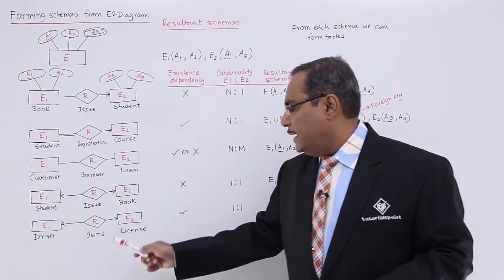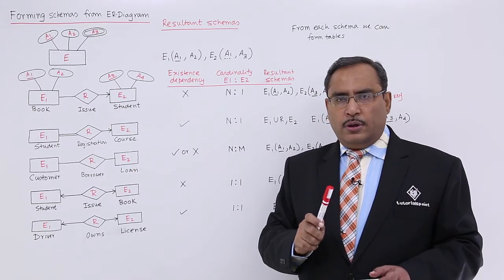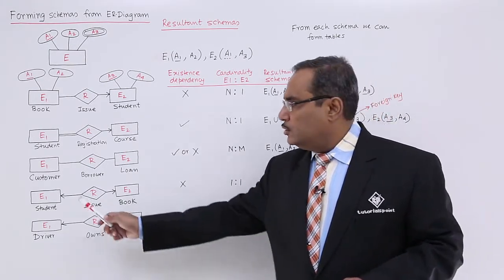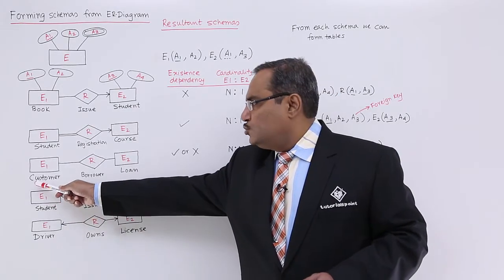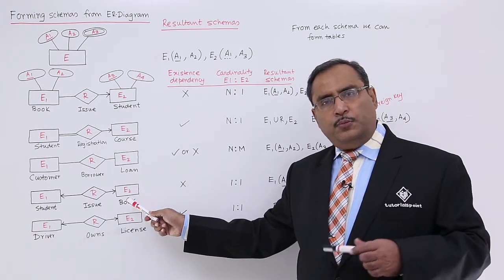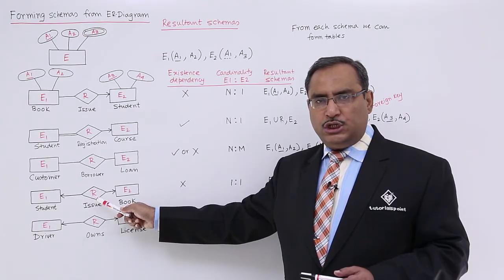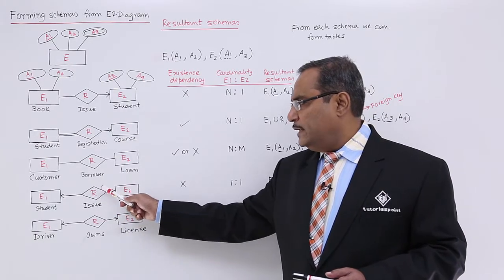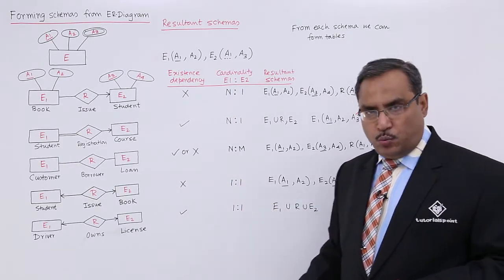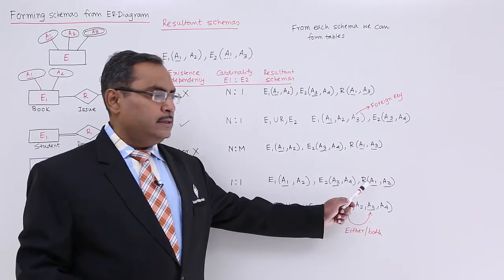Case five: one-to-one cardinality. A student can take only a single book and a book can be borrowed by only one student at a time. However, we cannot ensure all students will borrow a book, and we cannot ensure all books will always be borrowed — so there is no existence dependency. With one-to-one cardinality and no existence dependency, we form three separate schemas: E1, E2, and R.